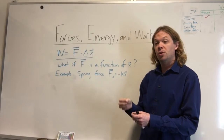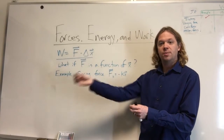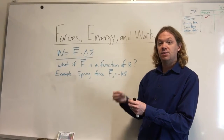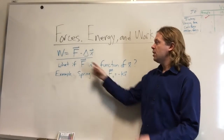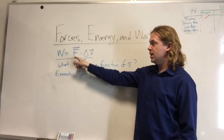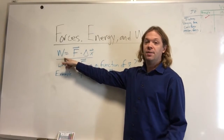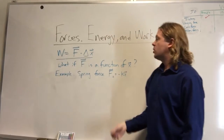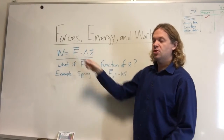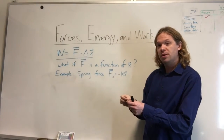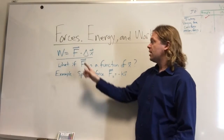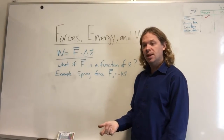If you have an object which goes from some initial position to some final position, that xf minus xi gives you delta x. You can dot that with some force acting on the object, and that tells you how much work that force did. But the question is, what if this force depends on the position? As you push the object, if that force changes, it's not clear what this dot product means anymore.